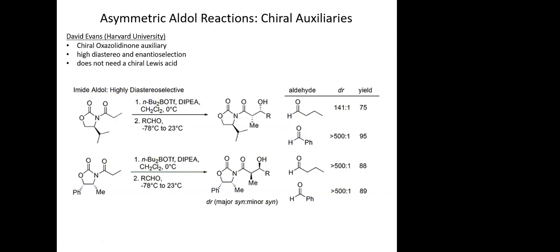You don't need a chiral Lewis acid — you just need a Lewis acid to activate the aldehyde. That's the purpose of the dibutylboron triflate: the boron acts as your Lewis acid, it's going to activate the aldehyde and lower the LUMO. That's what drives the reaction.